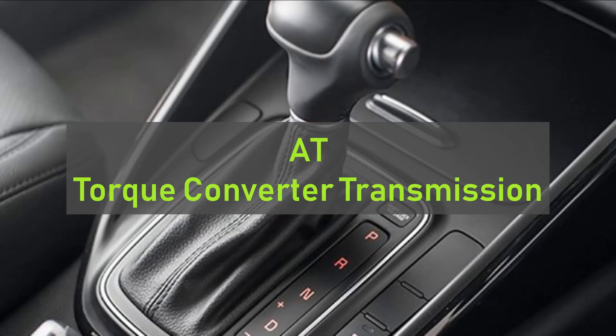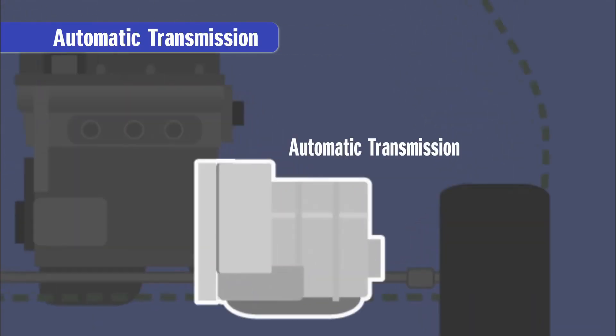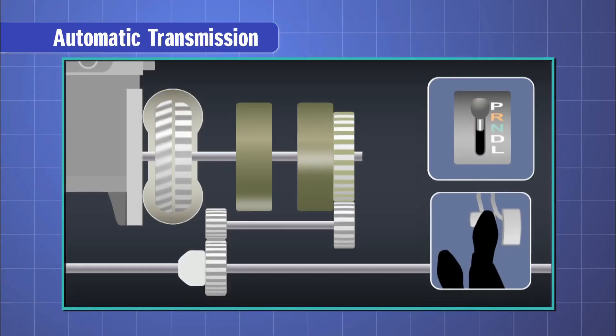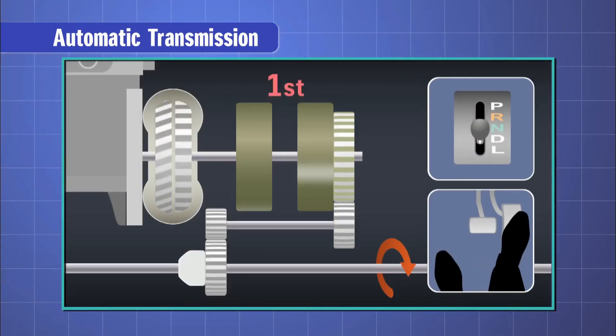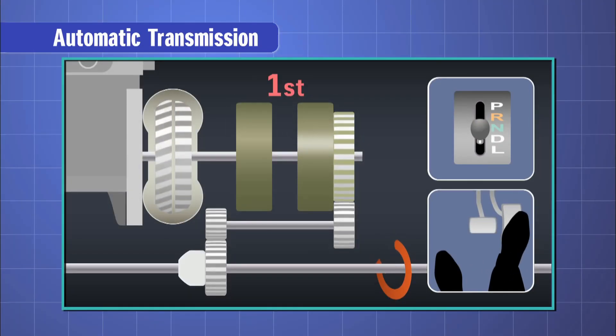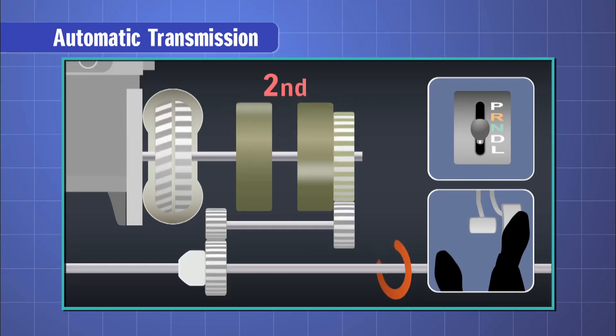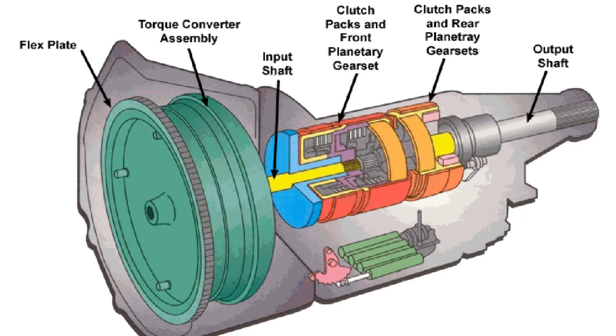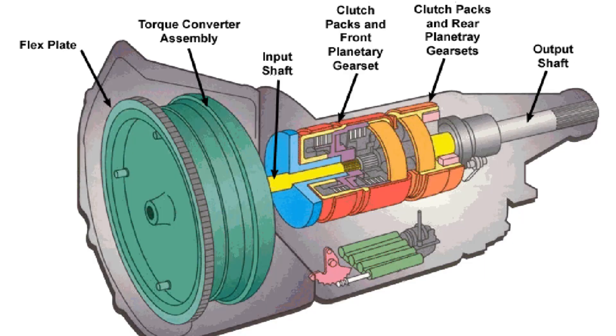Let's begin with the traditional automatic transmission or torque converter automatic transmission. The conventional automatic transmission or AT remains the most popular, most common form of automatic transmissions globally. Torque converters have been around for a really long time and as a result have become quite reliable. The AT makes use of a torque converter to transfer the power generated by the engine to the gearbox.